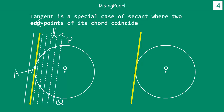This is very important to conceptually understand, friends. A tangent is a special case of a secant, where the two end points of the chord coincide. In other words, we started out with our original secant line and as we were sliding it outside, the two end points P and Q were consistently becoming smaller and smaller. And at point A, when the line was just touching the circle at one point, the two end points P and Q coincided, and we got a tangent to the circle.